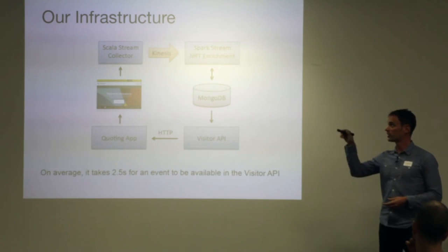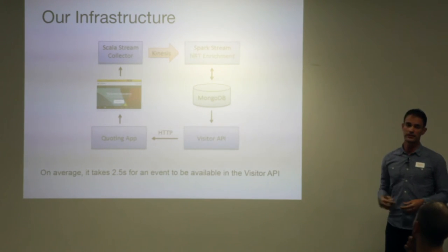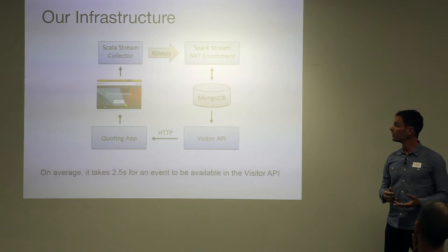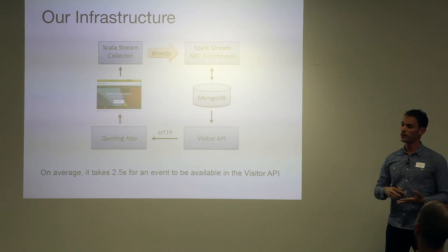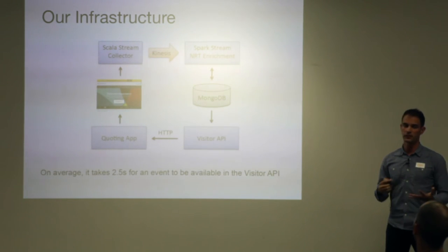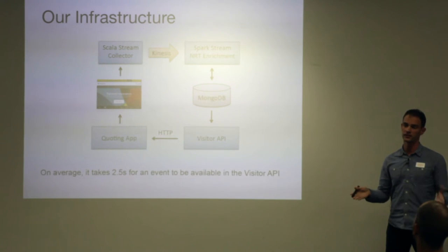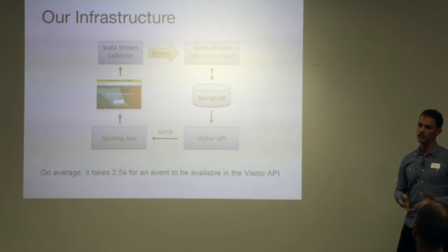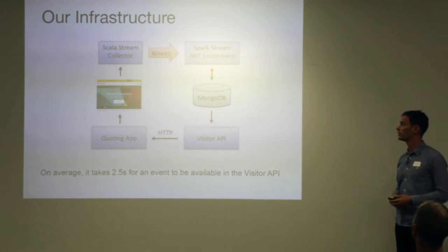That's because the Scala Stream Collector batches events for one second. And then we've got Spark mini-batches that are four seconds long. So in total, in the worst case, it's five seconds; the average would be two and a half.